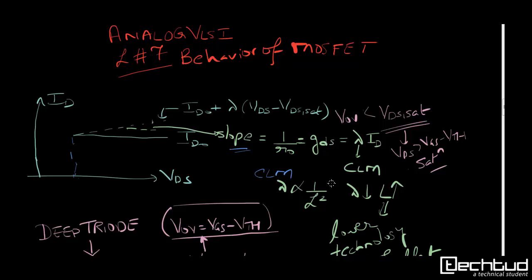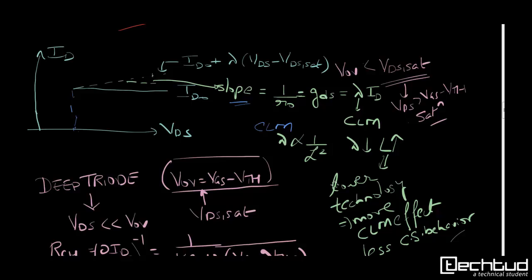So if technology is at higher length then channel length modulation effect will be smaller. In an impromptu way you can say that if suppose you are having 22 nanometer, the channel length modulation effect will be higher compared to a technology where the length is 180 nanometer.